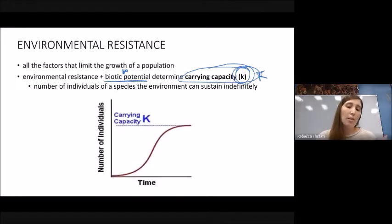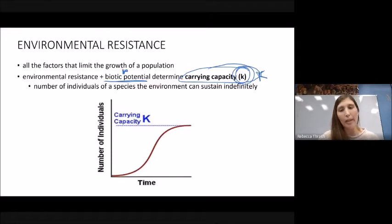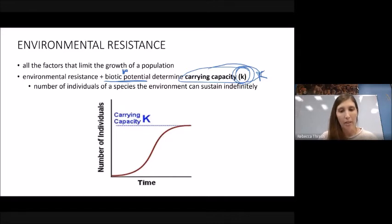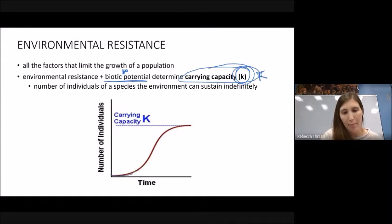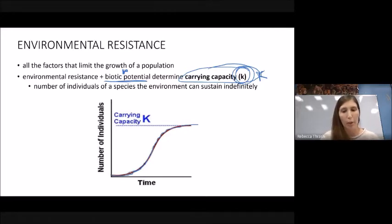Unlike the exponential graph, when we include carrying capacity — the ceiling limit on population size — we see that over time, instead of maintaining an exponential rate, growth starts to decrease as it approaches that carrying capacity. This produces the sigmoid S-shaped curve, known as logistic growth.